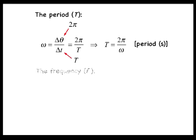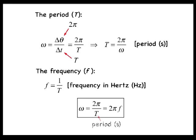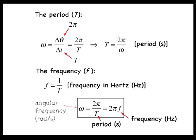The frequency f is equal to 1 divided by T, and has units of inverse seconds, or hertz. The relationships between the angular frequency, which has units of radians per second, the period, and the frequency are summed up as omega equals 2 pi divided by T, which equals 2 pi times the frequency f.